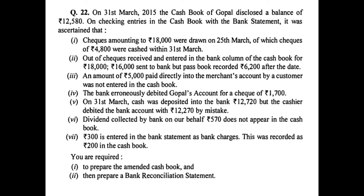Now let us discuss a practical question. On 31st March 2015, the cash book of Gopal disclosed a debit balance of rupees 12,580. Checks amounting to rupees 18,000 were drawn on 25th March, of which checks of rupees 4,800 were cashed within 31st March. Since checks issued but not presented for payment are not part of the amended cash book, this will be recorded in the BRS only.